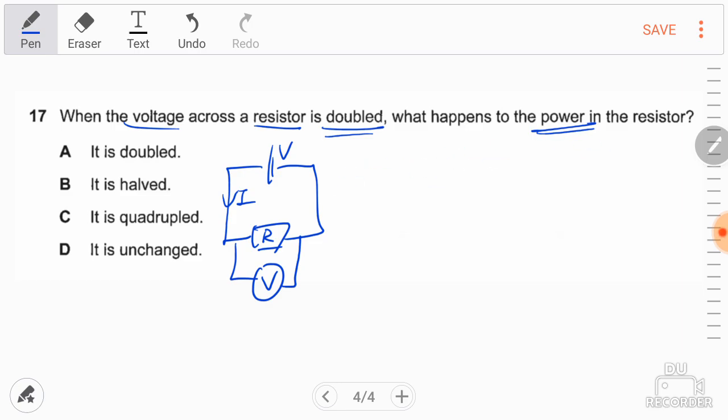So if I want to find power, of course I'll be thinking of the formula power equals to IV, but since I don't have I, I can also think about this formula V equals to IR. If you combine these two formulas together, you can actually get power equals to I squared R or power equals to V squared over R.